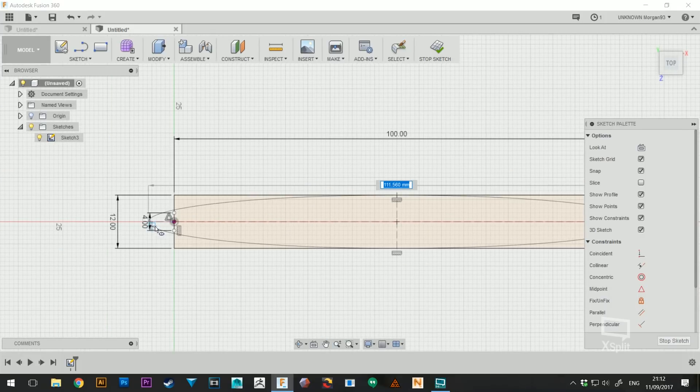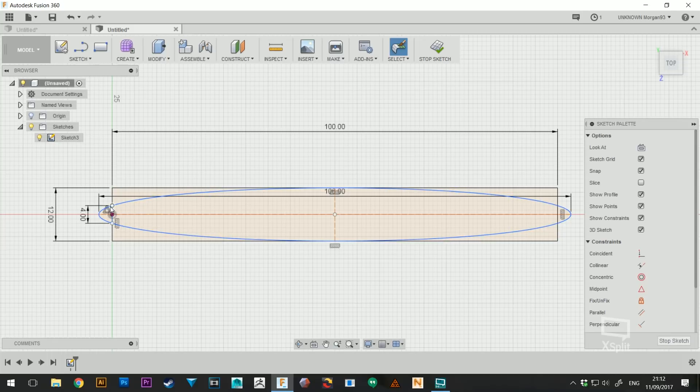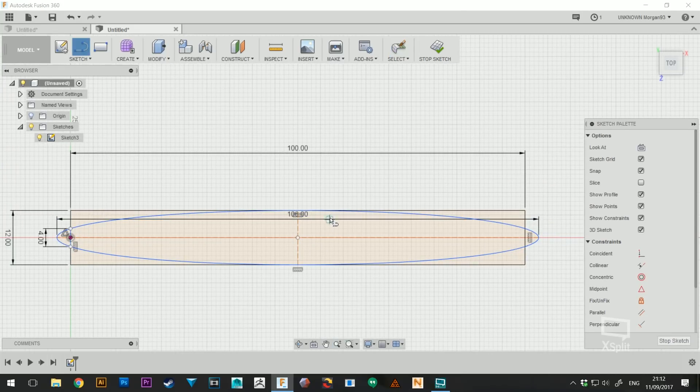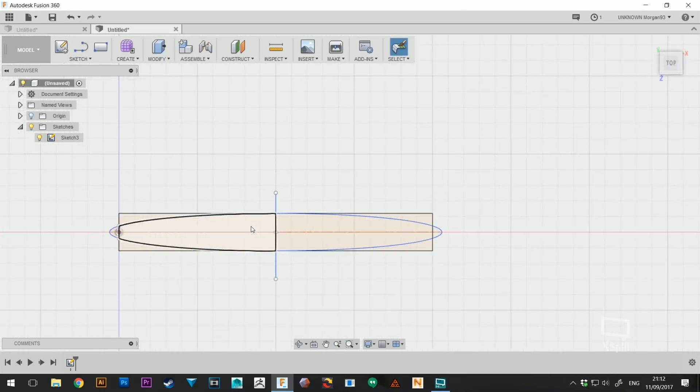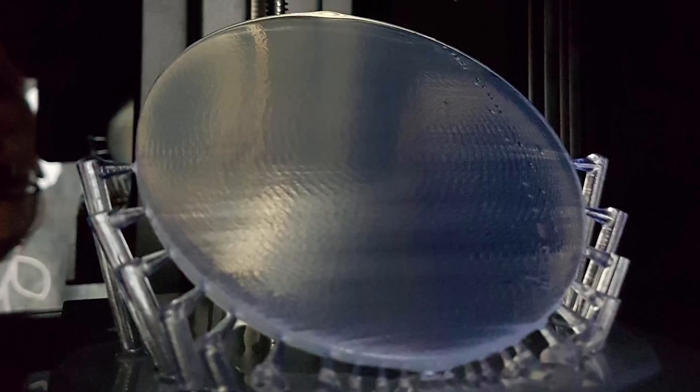Unfortunately, my export settings weren't as high as they should have been. It was a little bit too low poly for what I was trying to do with it, so when I printed it, it left some kind of ringing as you can see here. But that's fine because this is going to be absolutely sanded to hell anyway.